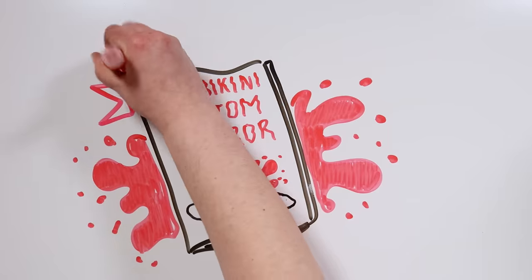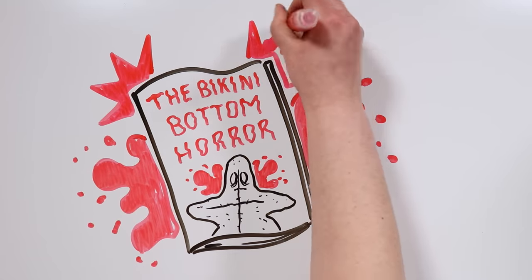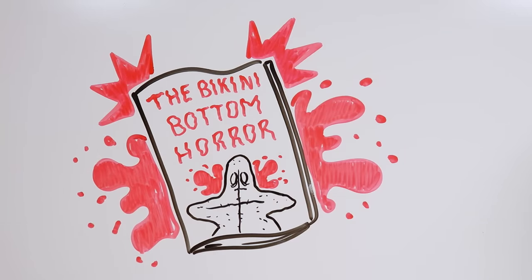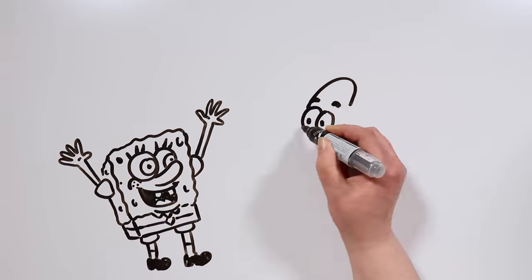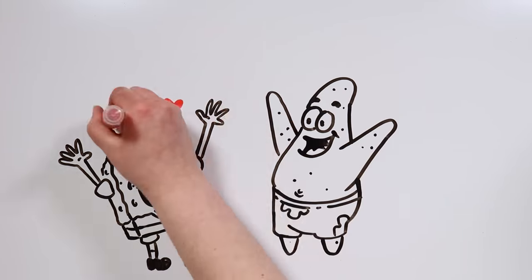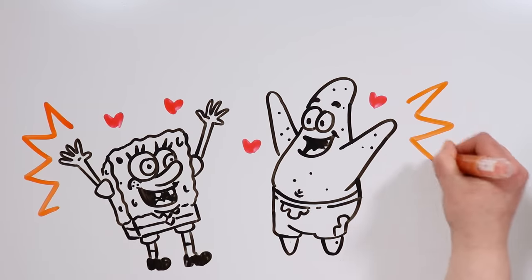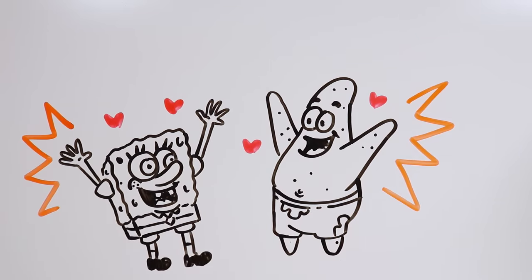This clashes head-on with the idea of the SpongeBob world we all have in our heads. Especially because in the show, Bob and Patrick are best friends. We are used to just seeing them getting into trouble or having a good time in Bikini Bottom.